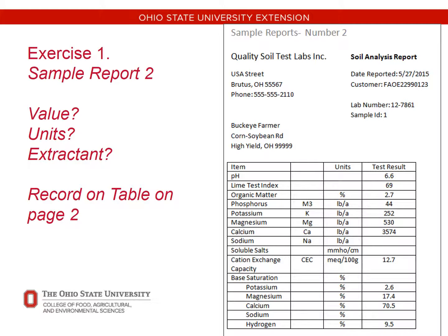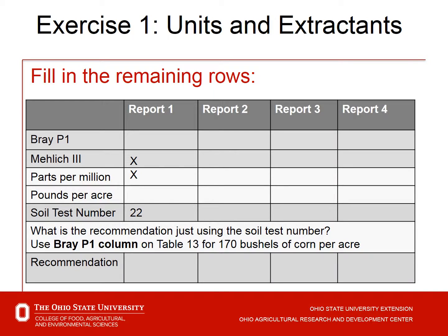Let's take a look at sample report number 2. Looking at this soil sample report, we find the phosphorus value is 44. The units being represented are pounds per acre. The extractant being reported is Mehlich 3 as well. So we go back to the table and fill in: Mehlich 3, pounds per acre, 44 for report form number 2.